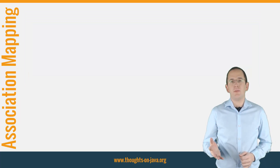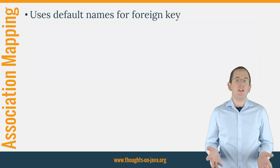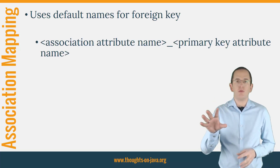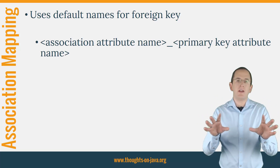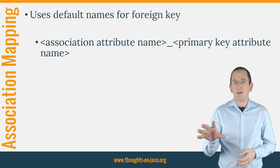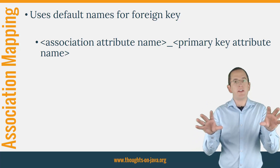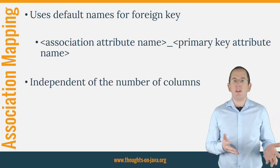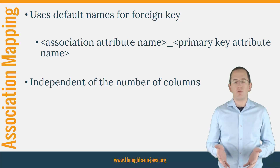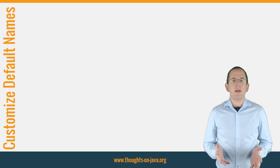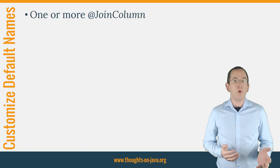If you don't provide any additional information about your association mapping, Hibernate uses default names for the foreign key columns. They follow the pattern: association attribute name underscore primary key attribute name. That means that 'books_id' is the default name for an association mapped by the books attribute that references an entity with a primary key column called id. This approach is independent of the number of columns forming the primary key. If it's a composite primary key, Hibernate generates a default name for each of the identifying entity attributes. You can adapt this mapping using one or more @JoinColumn annotations.